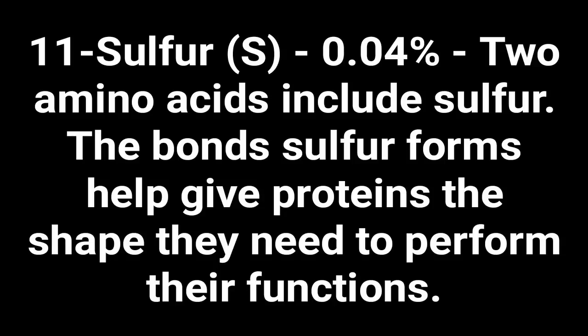Number eleven: sulfur — 0.04 percent of the human body. Two amino acids include sulfur. The bonds that sulfur forms help give proteins the shape they need to perform their functions.